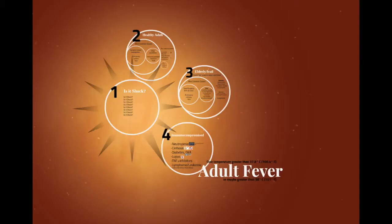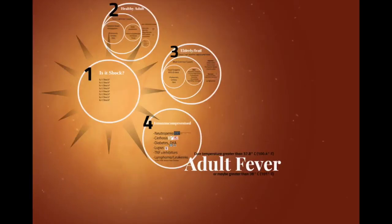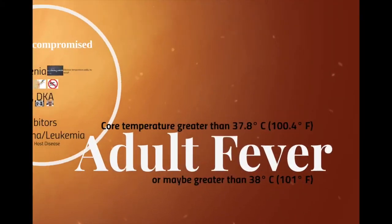For most people, fever is a core body temperature of 100.4 degrees Fahrenheit. Some people say 101. For the immunosuppressed, you call it a fever at 100.4 if they've had it for an entire hour, or 104 Fahrenheit at one time.